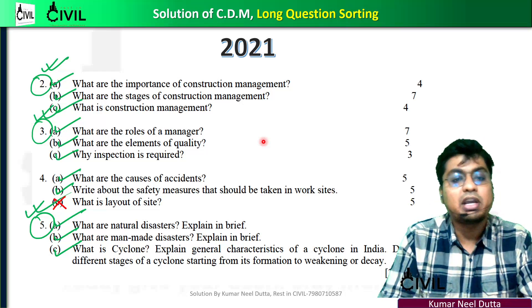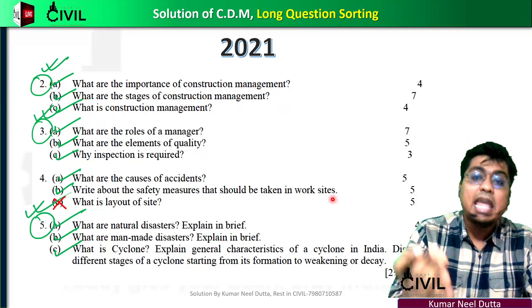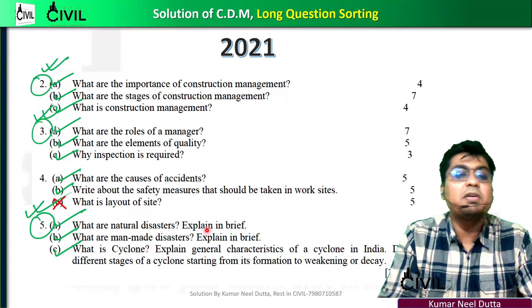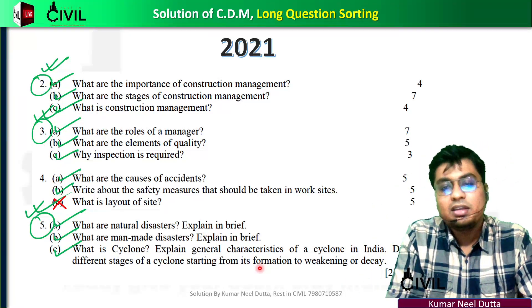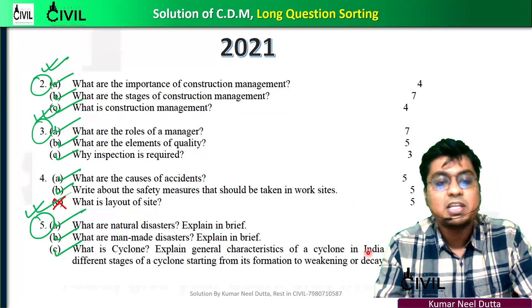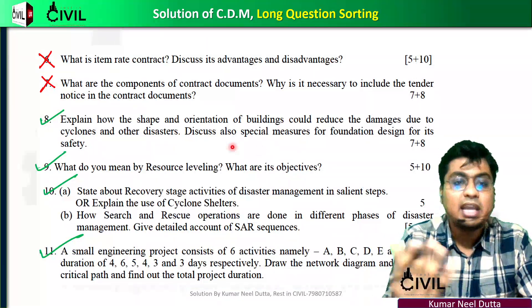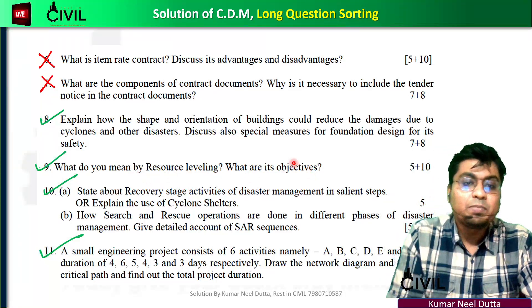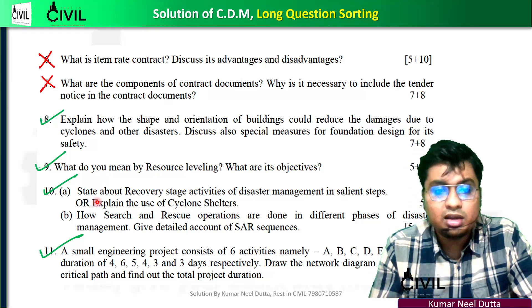The labor is also the cause of the accident. Number 5 is Natural Disaster — this is a man-made disaster. This is a cyclone. This is disaster management. There is no item rate contract. Explain the shape and orientation of building. This is a resource level — the plan is calculated.